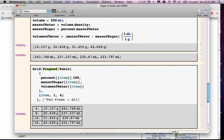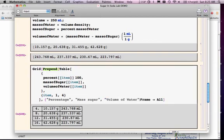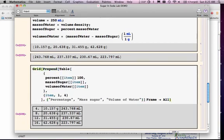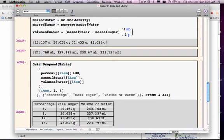And then you can come down here before the frame all, and you could type in here percentage comma mass of sugar comma volume of water. Close your curly bracket, close your square bracket, put a comma. And if you evaluate that, you should have a nice table that looks like that.